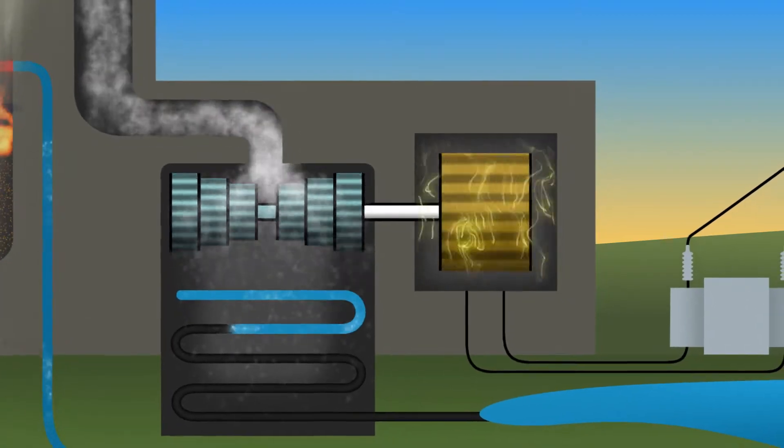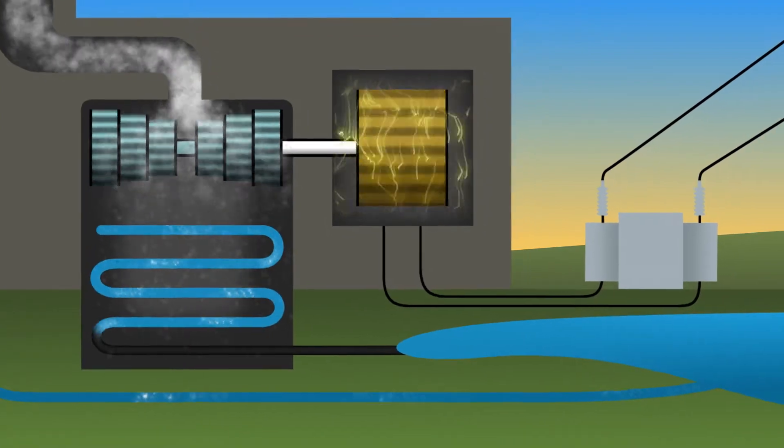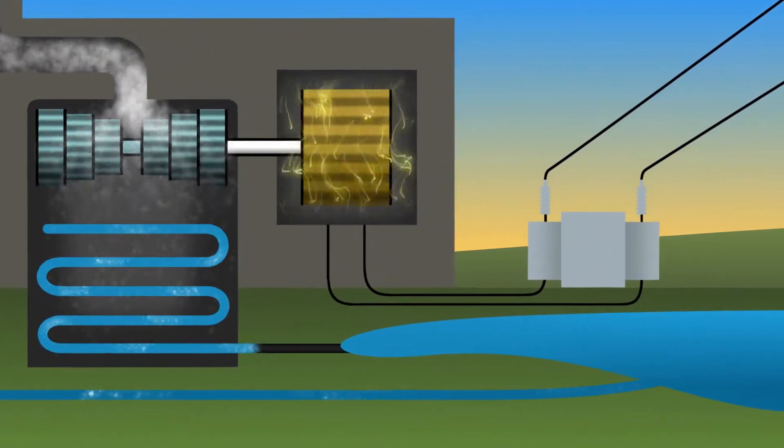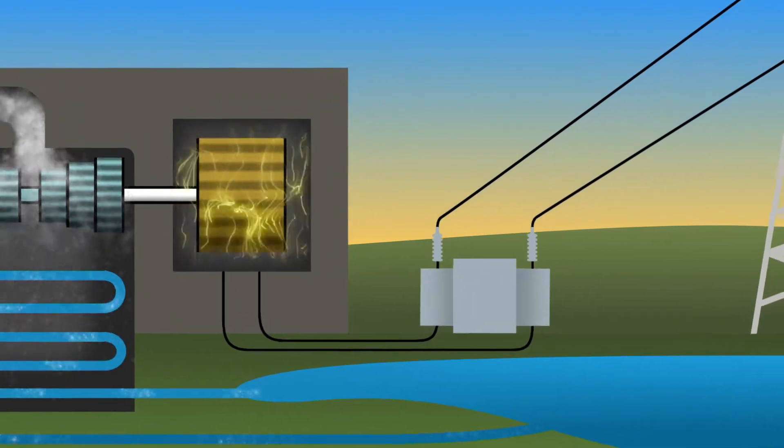A condenser captures the steam, turning it back into water to be used again in the boiler. Outside water in separate pipes cools the condenser and then returns to a holding pond.